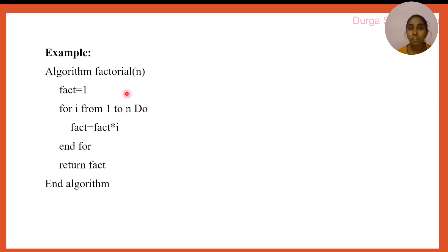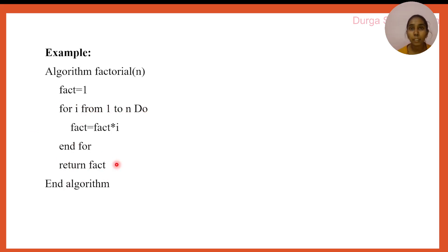Continuing — when i equals four: six into four is twenty-four. When i equals five: twenty-four into five is 120. There are no more elements, so the loop repeats from i equals one to n, five times. When i increments to six, it exits the loop and returns the fact value, which is 120. Since we used a for loop, this is an iterative algorithm.